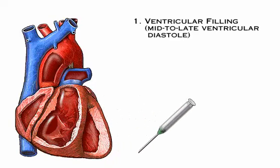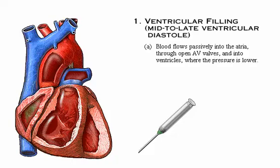The first phase of the cardiac cycle is ventricular filling, which occurs during mid to late diastole when the heart chambers are relaxed. Blood flows passively into the atria through the open AV valves and continues into the ventricles where the pressure is lower.